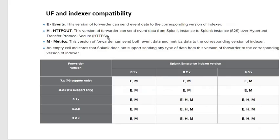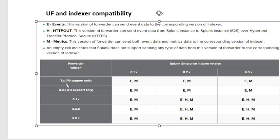You will see UF and indexer compatibility. Managers ask these questions — try to remember that if the indexer version is 8.x or 9.x, you can have Universal Forwarder versions like 7.x or 8.x. There are also three kinds of data types: E meaning events, H meaning HTTP, and M meaning metrics. Try to remember this chart to answer on interviews.